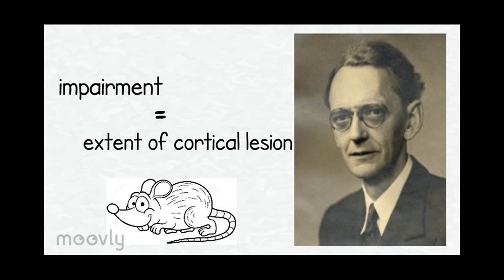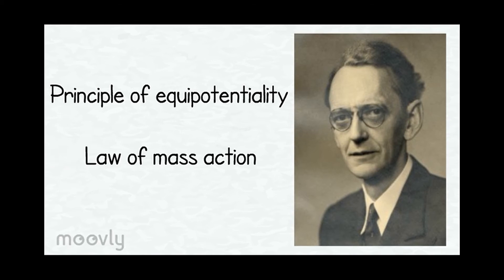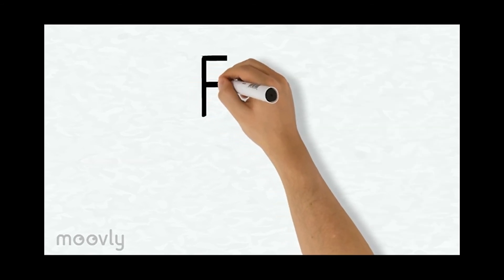Specifically, this impairment in maze learning was produced by equal amounts of destruction in any of the principal regions of the cortex. Based on his observations, Lashley extended Flourens's idea: the principle of equipotentiality — the rat's cortex functions as a unit in maze learning and no one part of it has special significance — and the law of mass action — the more cortex is available, the more rapid and accurate the learning.